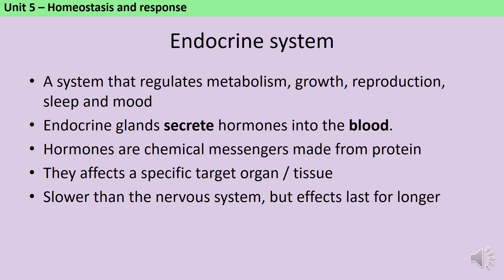Hormones are chemical messengers. They're made from protein, so glands which make hormones must contain lots of ribosomes. Once the hormones are in the bloodstream, they are pumped around the body with the blood until they reach a specific target organ or tissue, where they bind and have an effect. Hormones act much more slowly than the nervous system, but their effects last for longer.